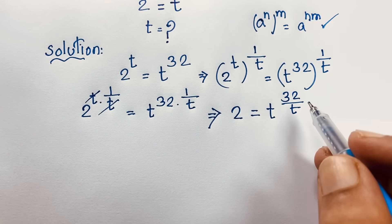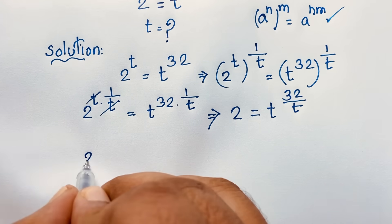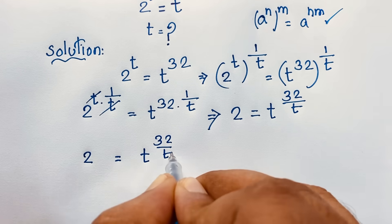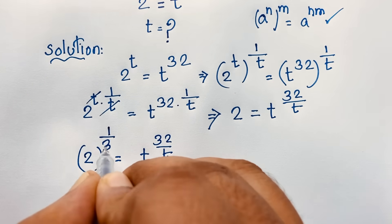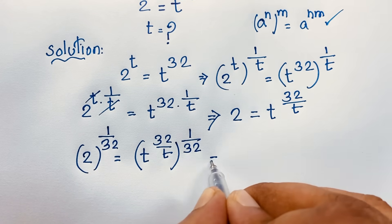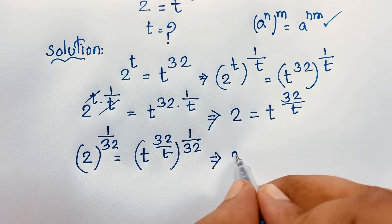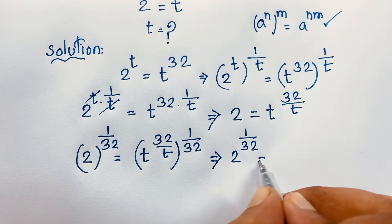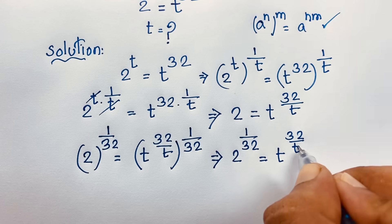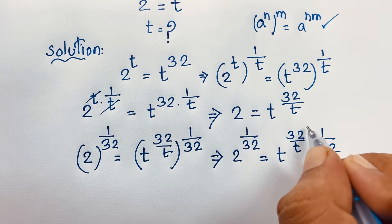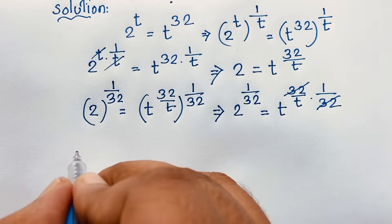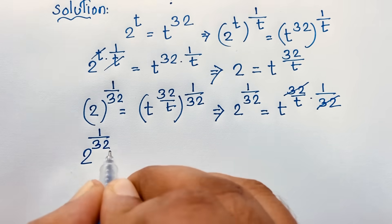Now at this point I apply both sides to the exponent 1 over 32 again. So: 2 to the power 1 over 32 is equal to t to the power (32 over t times 1 over 32). The 32s cancel on the right side, and we find: 2 to the power 1 over 32 is equal to t to the power 1 over t.